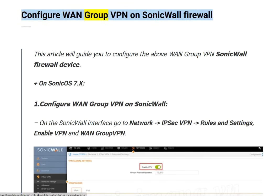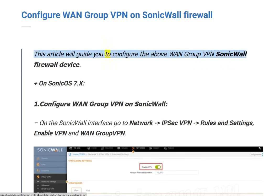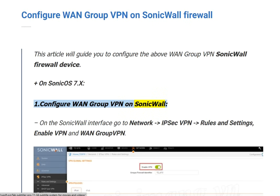This article will guide you to configure WAN Group VPN on a SonicWall Firewall device, running SonicOS 7.x.